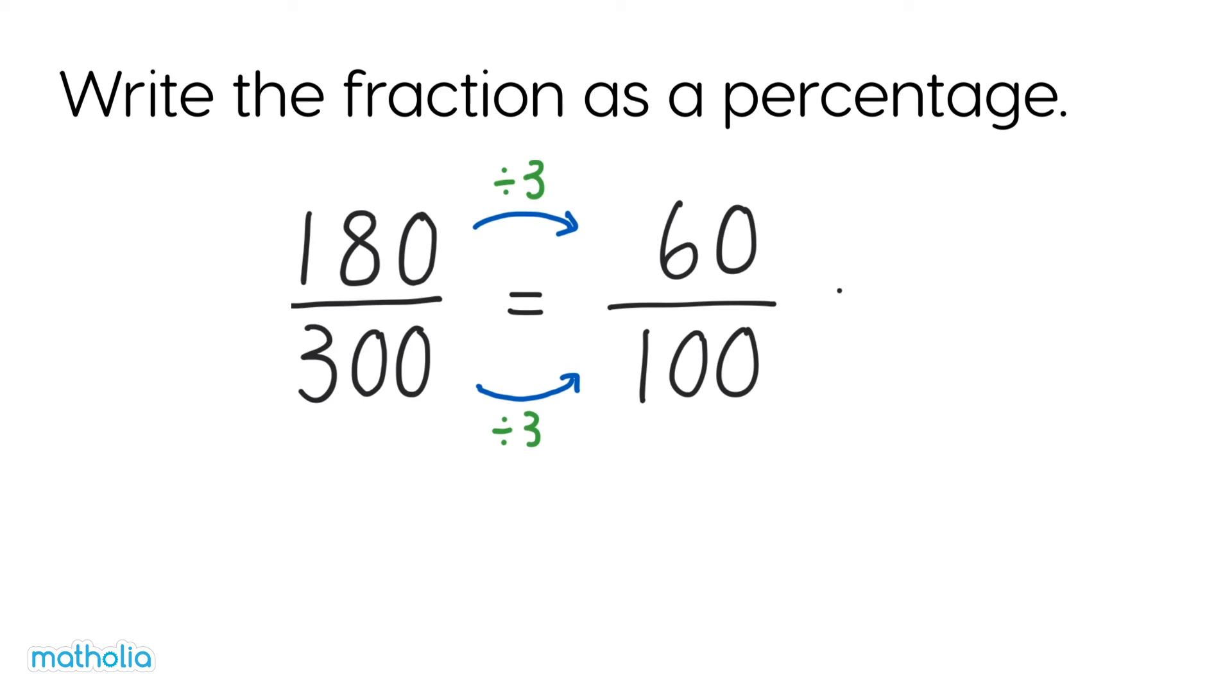180 three hundredths equals 60 one hundredths, which equals 60%. See you next time!